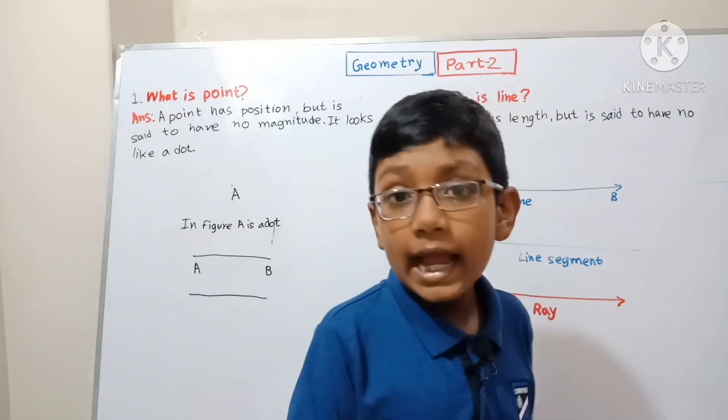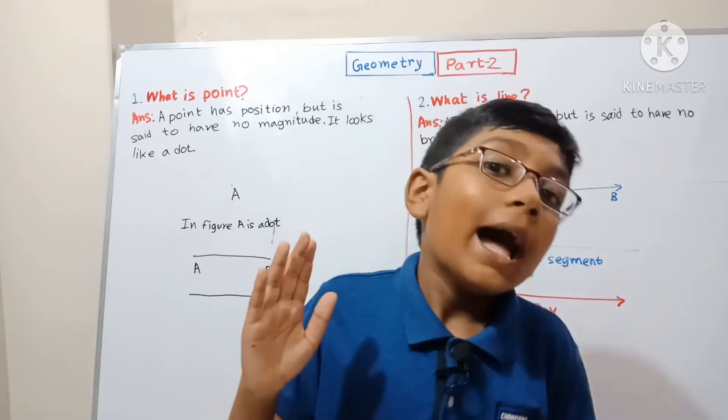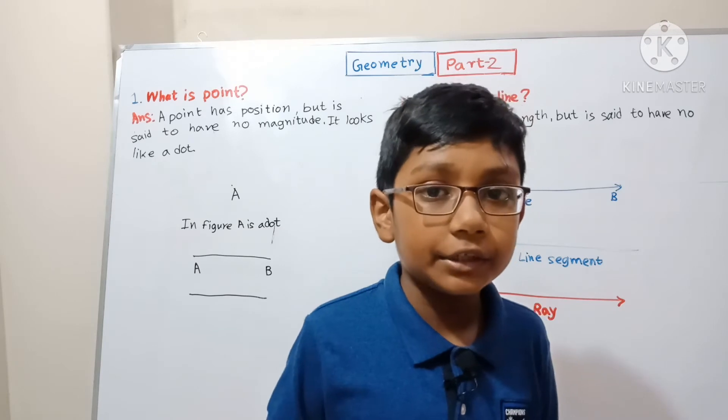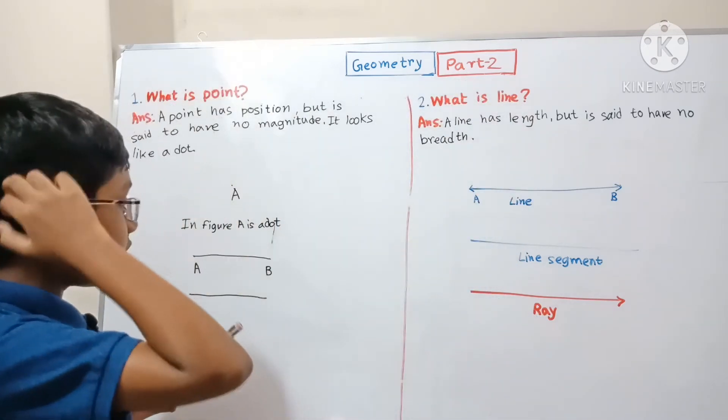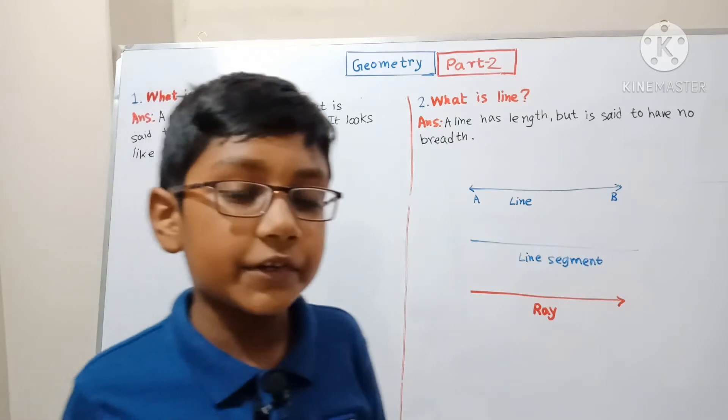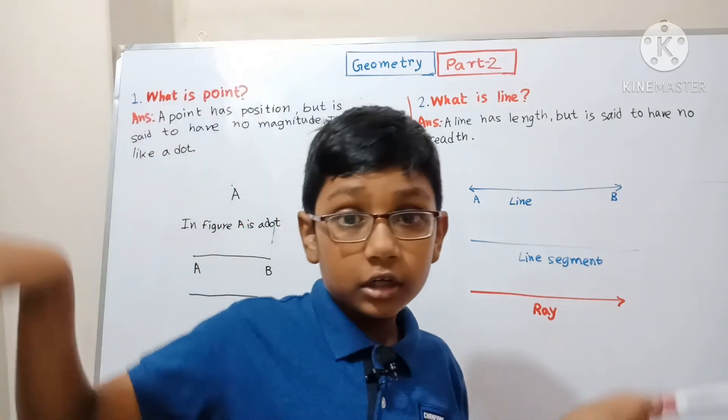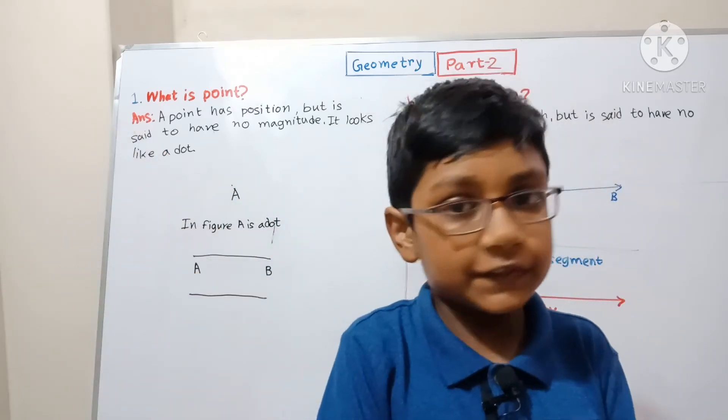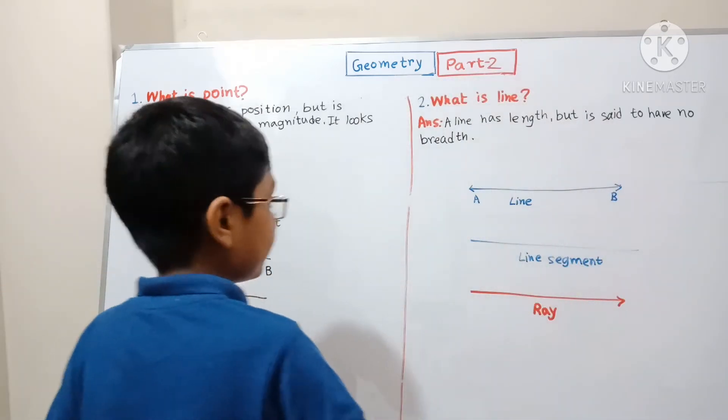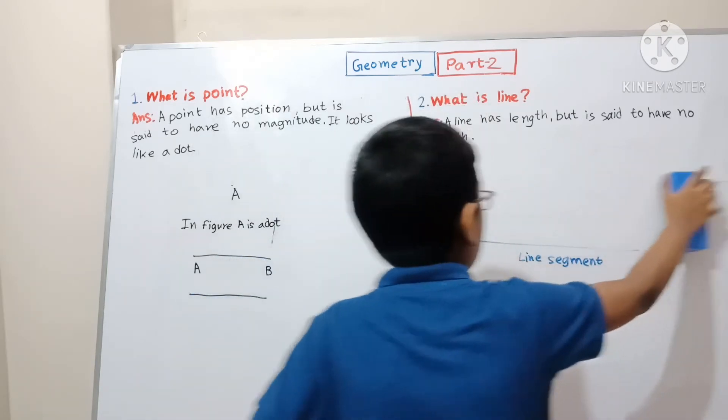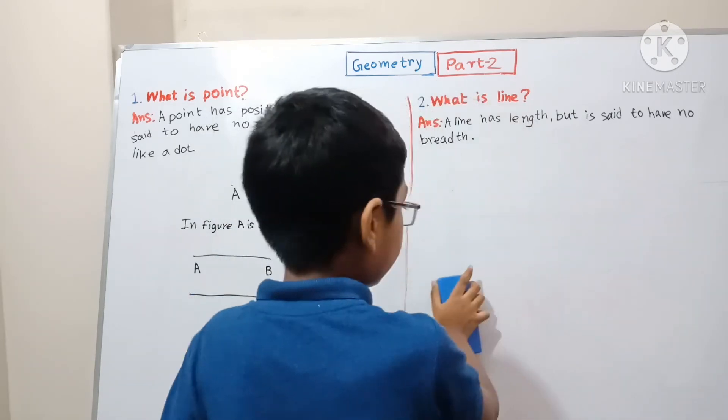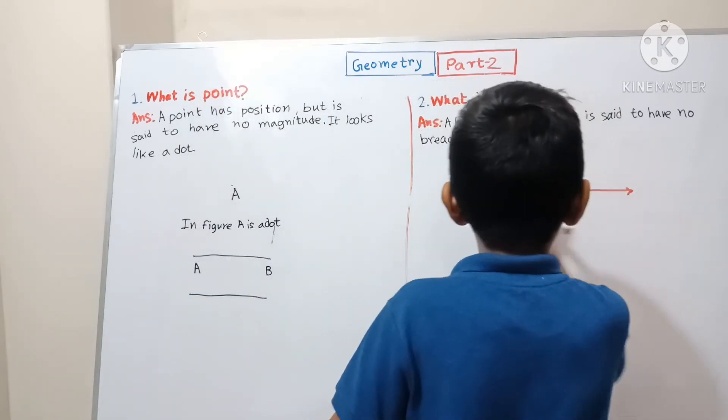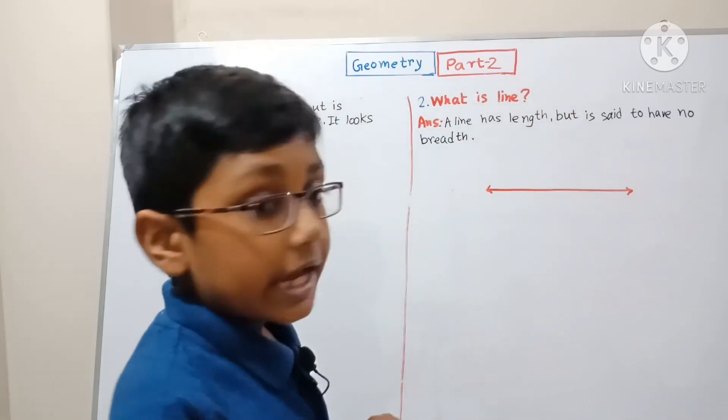Now we're going to learn how many parts are there in a line. It is called a straight line and a curved line, which keeps going on forever in both directions. Let me erase what we have learned.